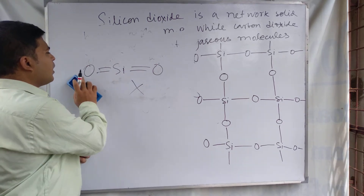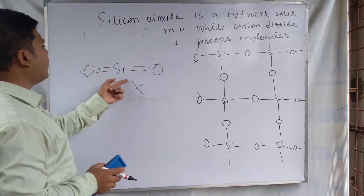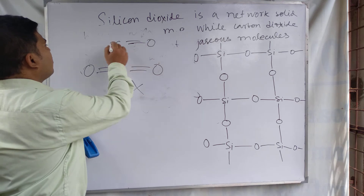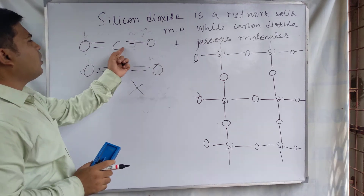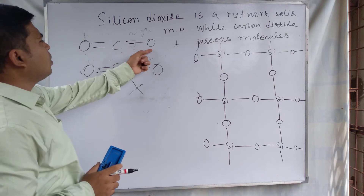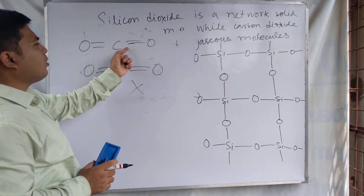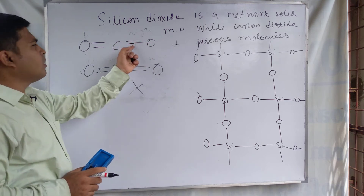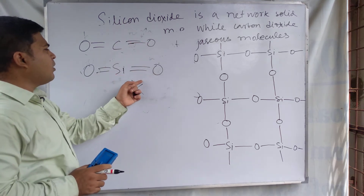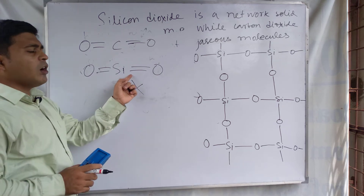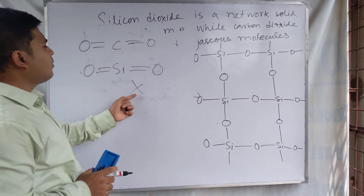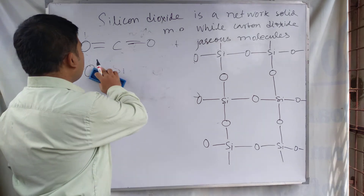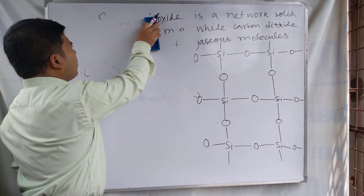For this reason, SiO₂ does not form a double-bond structure, but CO₂ can form a double bond because of the lateral overlap of the p orbitals of carbon and oxygen. In the case of silicon dioxide, silicon is larger in size than oxygen and cannot form pi bonding by lateral overlap of p orbitals.